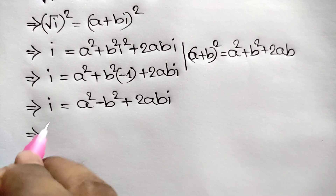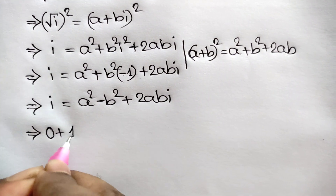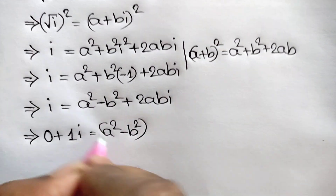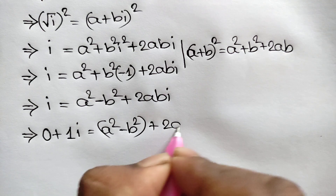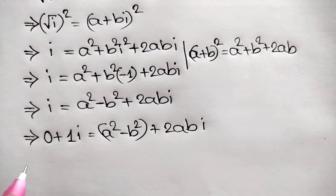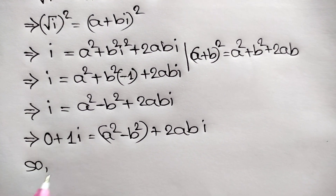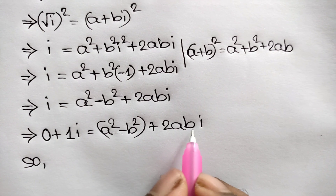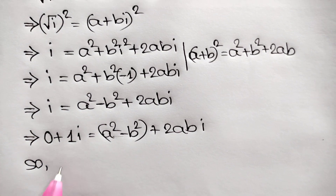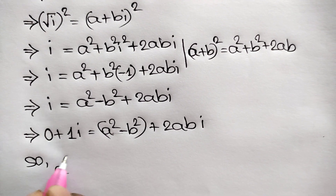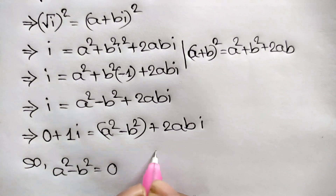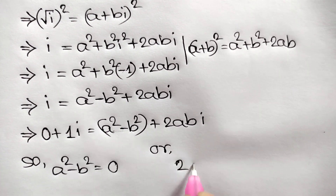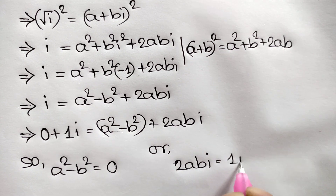We can rewrite the left side as 0 + 1·i = (a² − b²) + 2ab·i. Comparing real and imaginary parts: a² − b² = 0, and 2ab = 1.